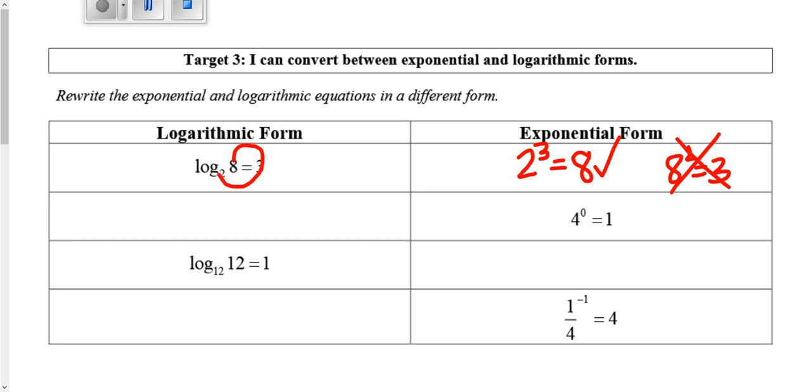Let me do another example: log base 12 of 12 equals 1. Following the loop-de-loop idea, the first number is 12, second is 1, third is 12, giving 12^1 = 12. That's a true statement, so that's our answer.